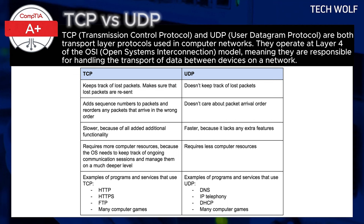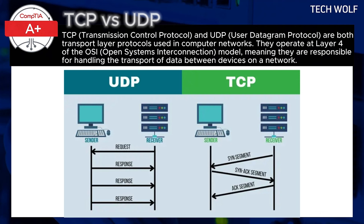To sum this all up, TCP and UDP serve different purposes based on their core characteristics. TCP is connection-oriented, reliable, but slower due to the three-way handshake, error correction, and packet acknowledgement — it ensures that data is transmitted accurately and in the correct order, making it ideal for tasks where accuracy is critical, like browsing the web, transferring files, and email. UDP is connectionless, fast, but less reliable — it doesn't guarantee that all packets arrive or that they arrive in the correct order, making it ideal for real-time applications like online gaming, video calls, or streaming, where speed is more important than complete accuracy. Both protocols are essential to how the internet functions, and they are used in different scenarios depending on whether the priority is speed or reliability.